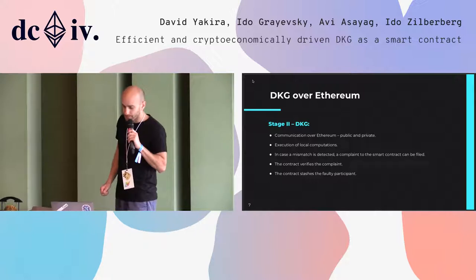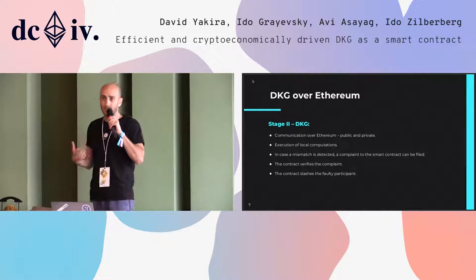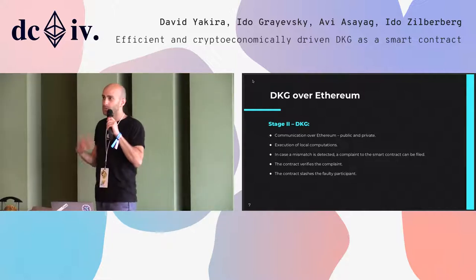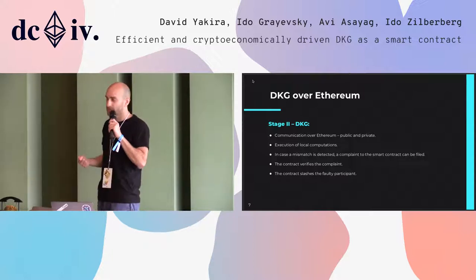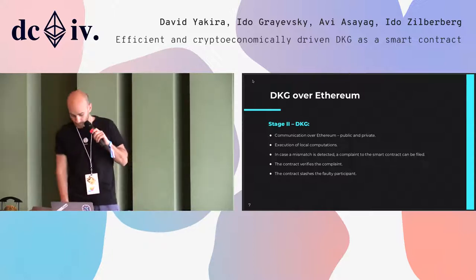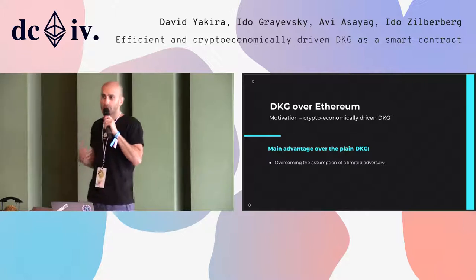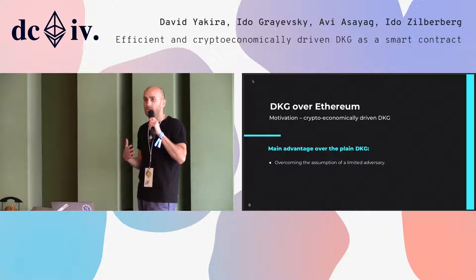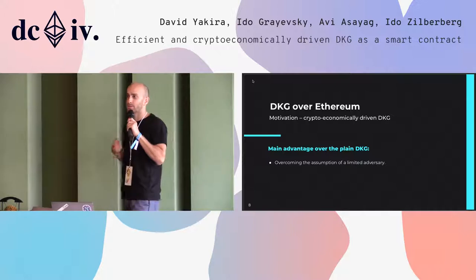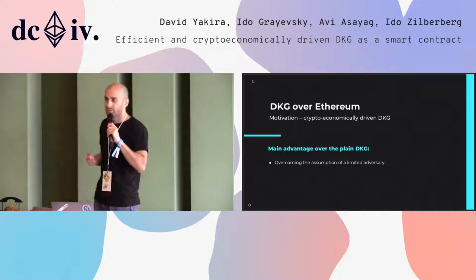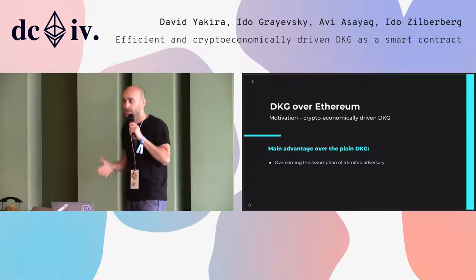However, if there's a problem, any participant that detects an issue with another participant's data can file a complaint to the smart contract. The smart contract then re-executes the reported computation, finds whoever is faulty, and slashes that participant. We were able to find valid complaints for every way that a participant can diverge from the protocol instructions. This means that if you care about your deposit, you have to follow the protocol correctly — or else you'll be complained against and slashed.